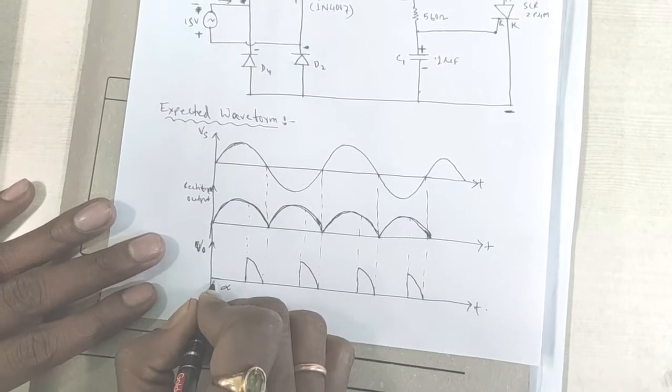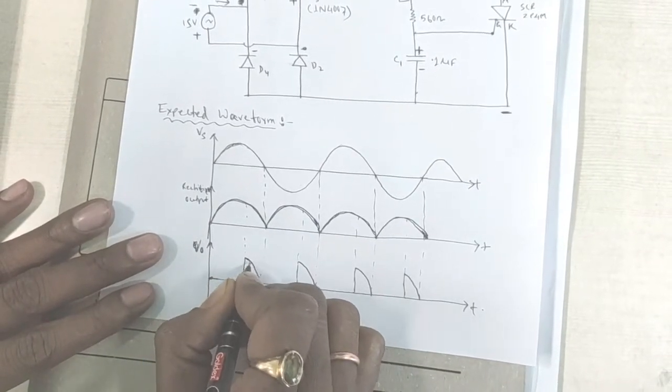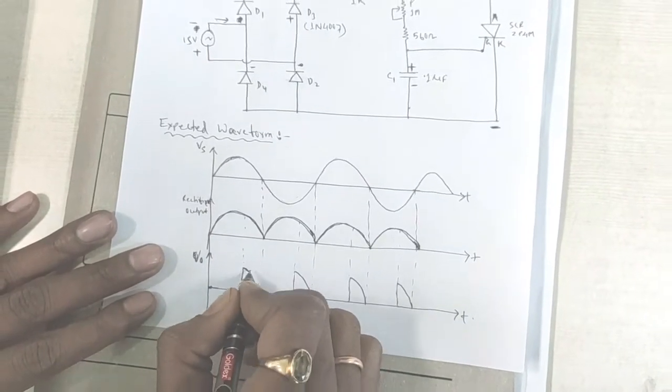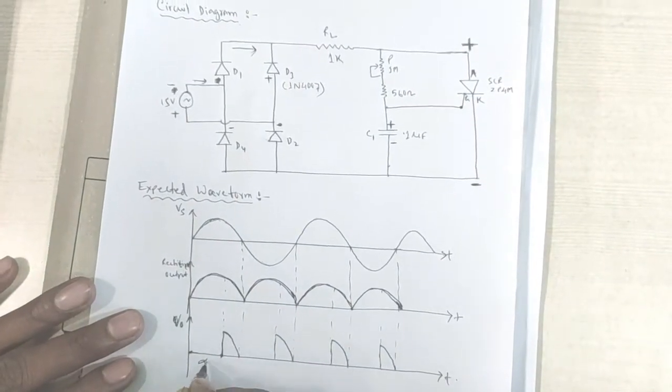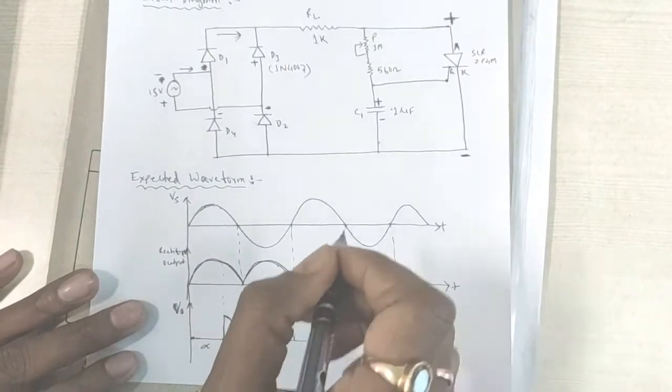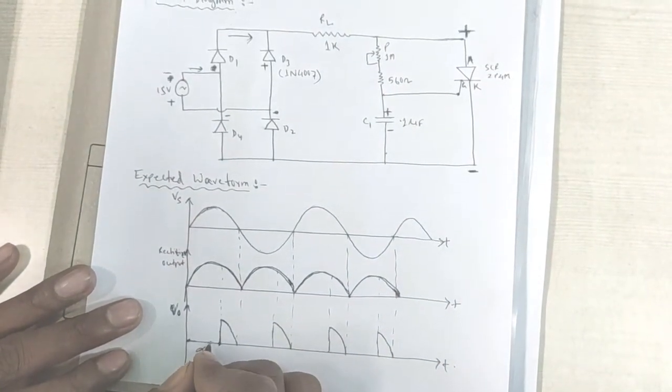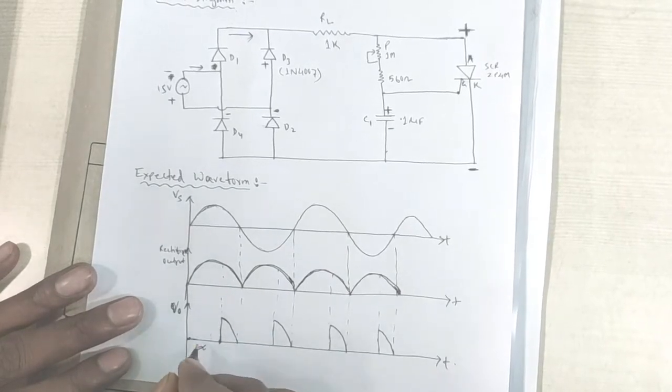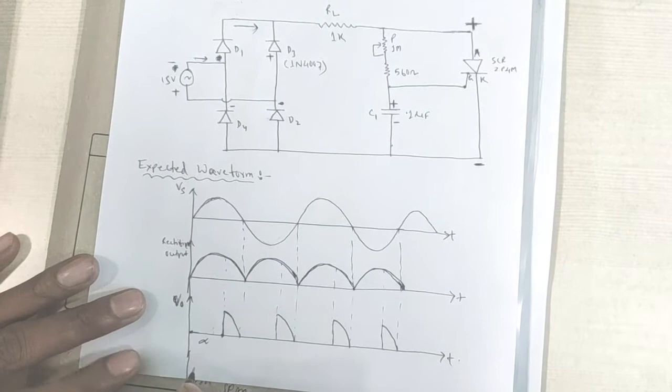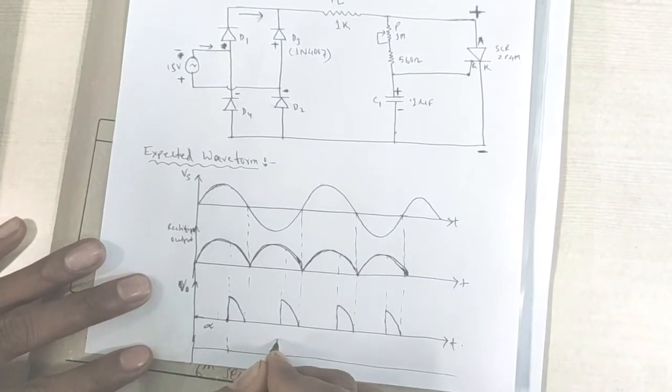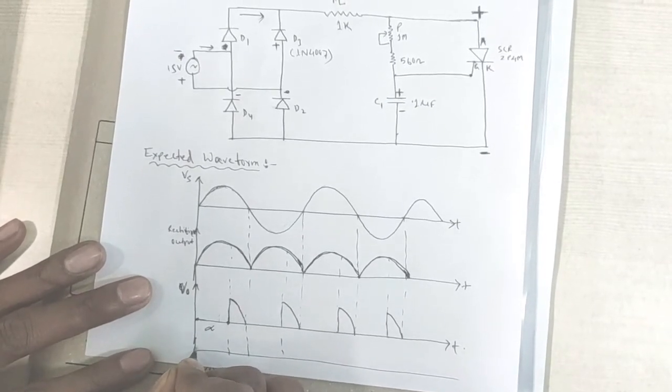Now, this is the alpha. After triggering, we will get the output voltage at RL and waveform is like this. This angle can be changed by changing the resistance of this potentiometer. It can start from here, also can start from here. This portion is used for capacitor charging. First capacitor start charging.